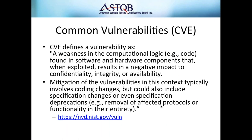A common vulnerability is a weakness in computational logic — such as code found in software and hardware components — that when exploited results in a negative impact to confidentiality, integrity, or availability (the CIA framework). This definition comes from NIST. Mitigating vulnerabilities typically involves coding changes, but can also include specification changes — like requirements — or even specification deprecations, meaning removing certain things to mitigate the vulnerability.